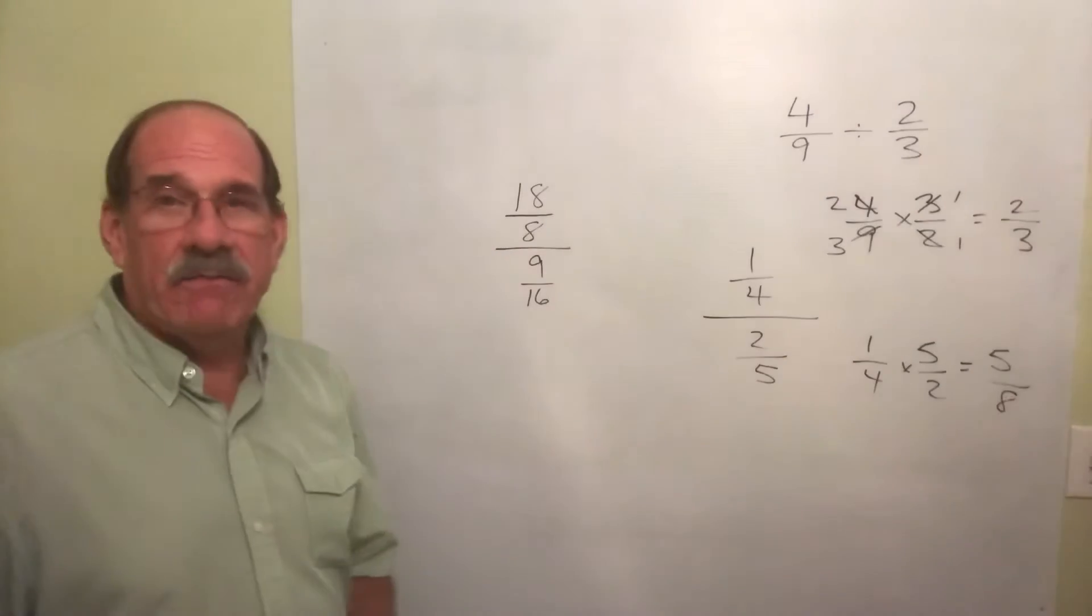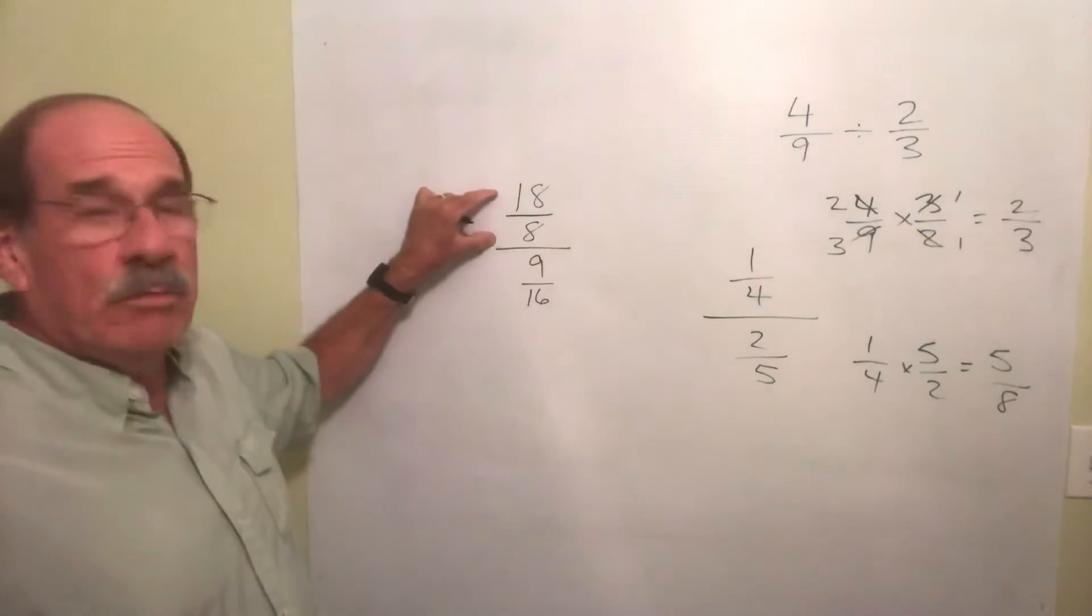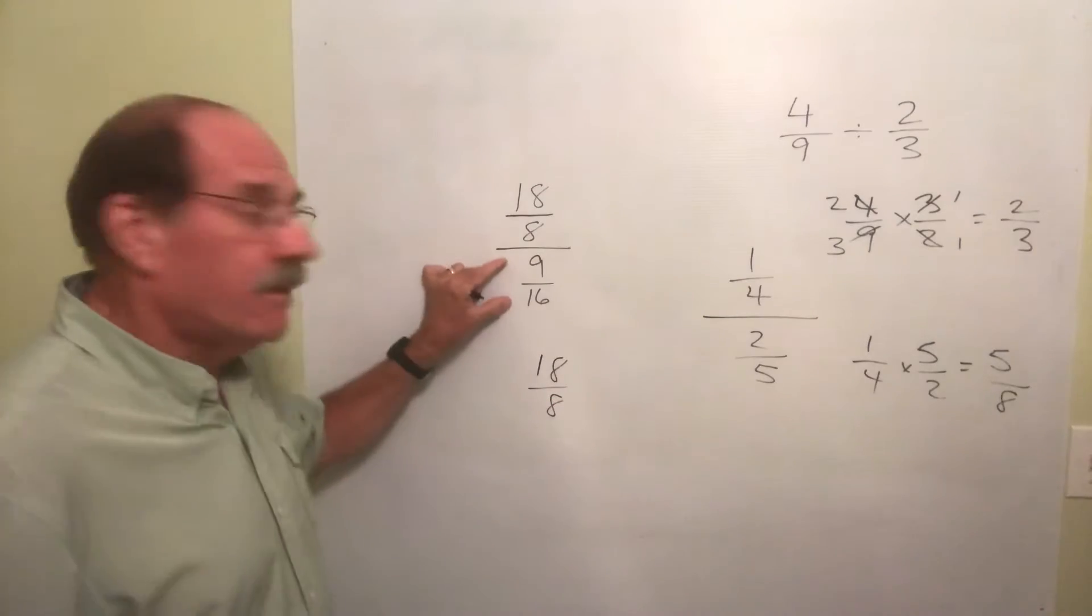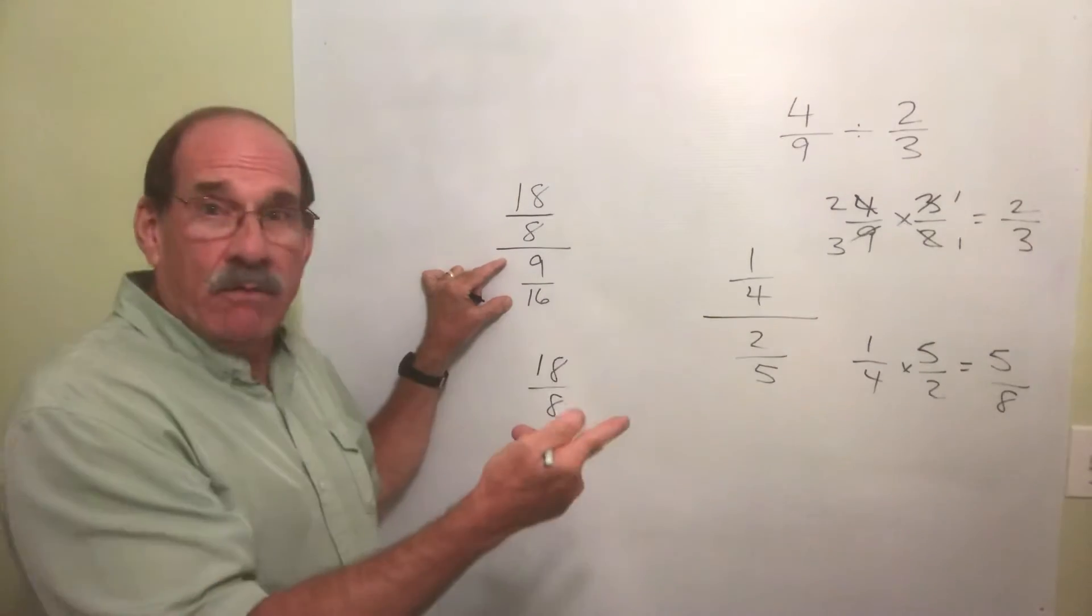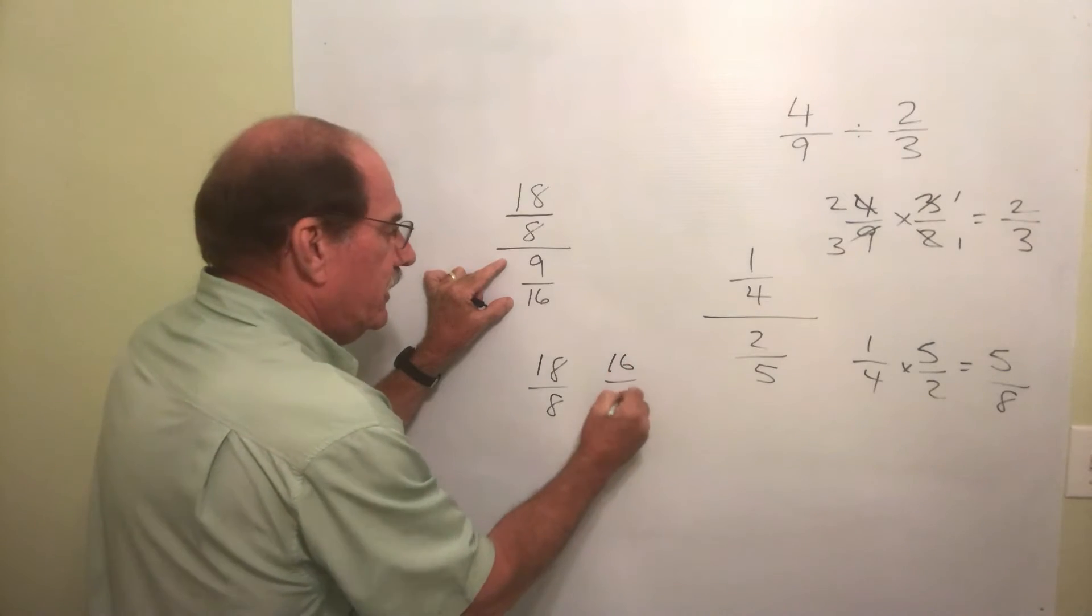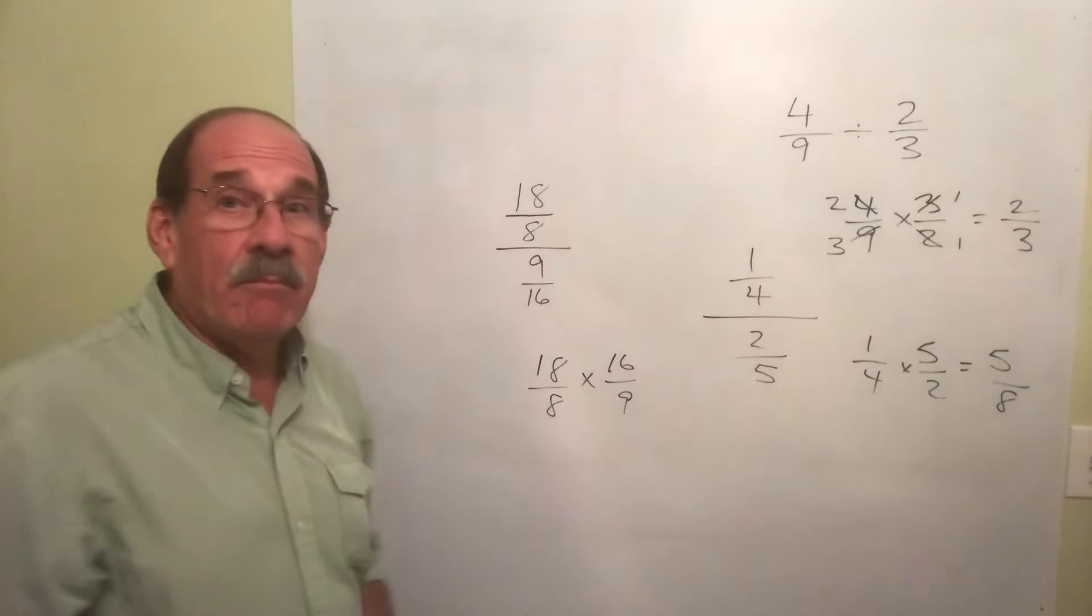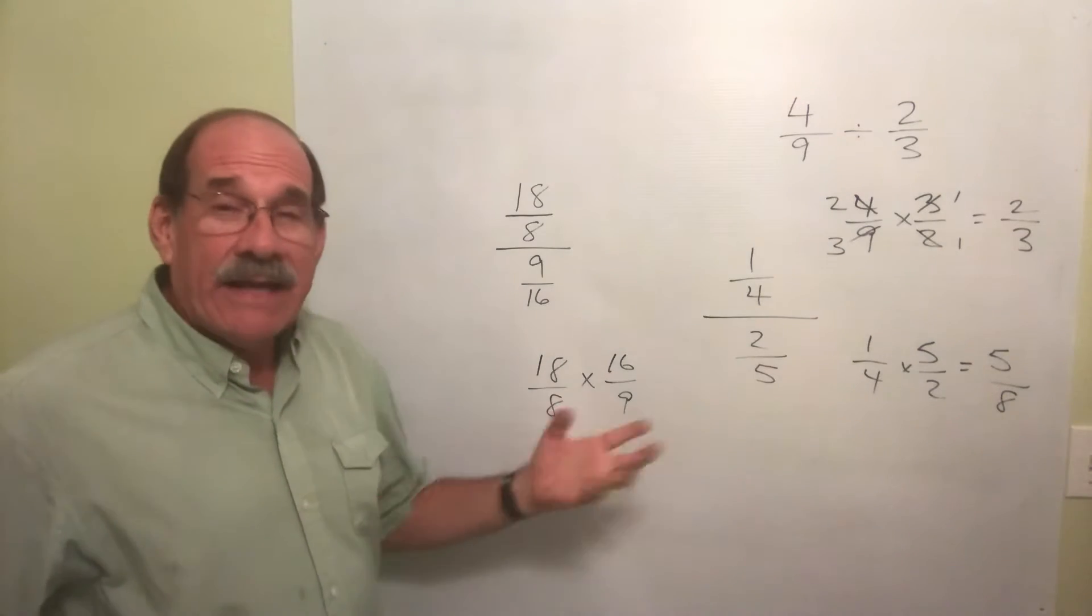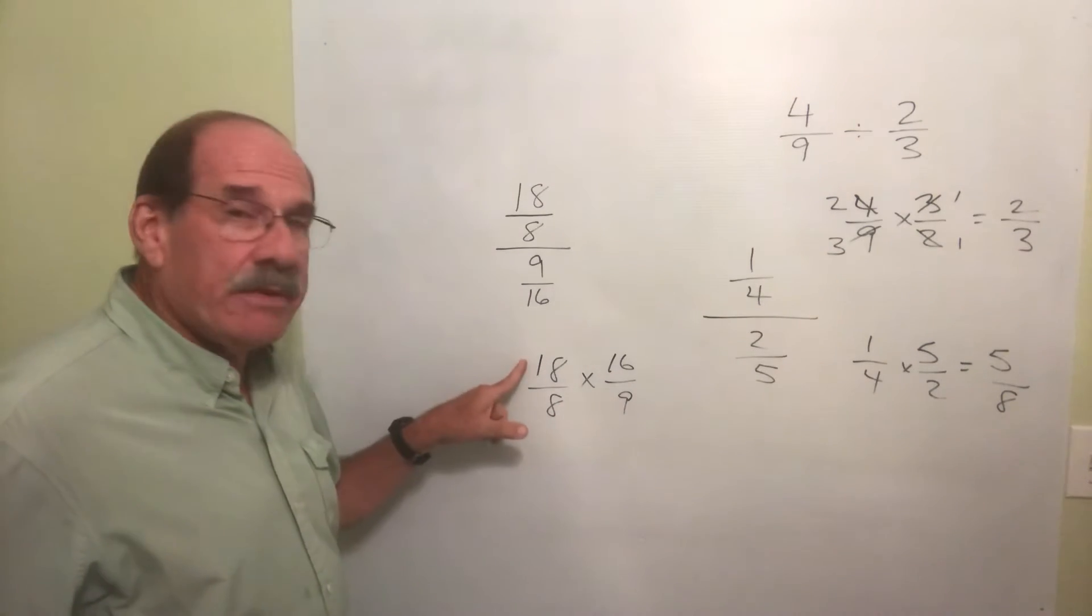Denominator is a fraction. Well, the top one, the numerator, just write it down: 18 over 8. But this one you flip it over, just like any division problem with fractions. 16 goes here, 9 goes here, and I end up multiplying. Now remember this thing about dividing by the same number, the top of this, the bottom of this.